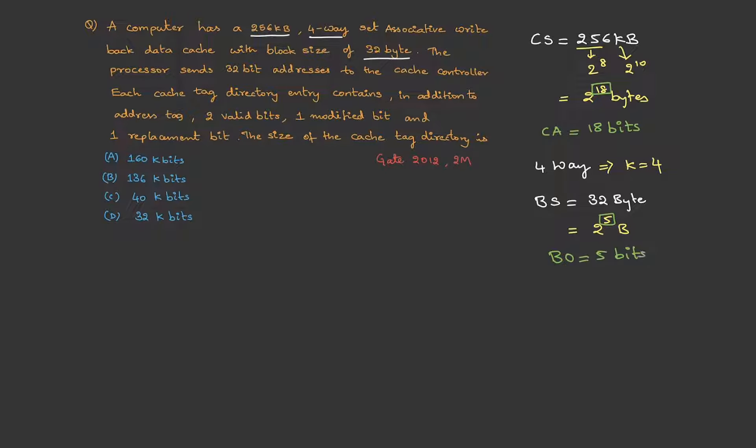Then it is mentioned that the processor sends 32-bit addresses. So, basically the physical address is 32 bits. Then they mentioned about the meta information, where we have valid bits, modified bits and replacement bits. So, let's write them as well.